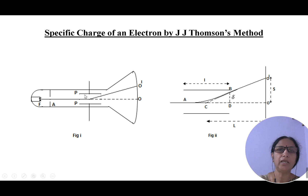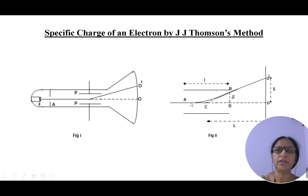When the electric field is applied between the plates P and P — that is, the upper plate is made positive and the lower plate is made negative — an electric field is established between the plates. It is given by the expression: if V is the applied potential and D is the distance between the plates, then the electric field is E = V/D. When the electric field is applied, the electrons start moving in a curved path; that is, they are deflected.